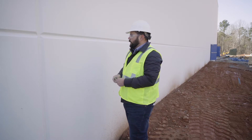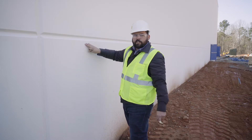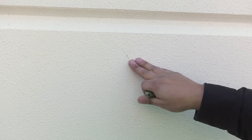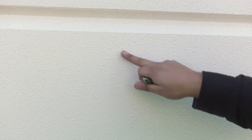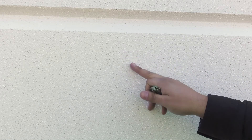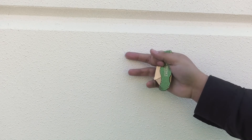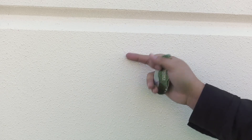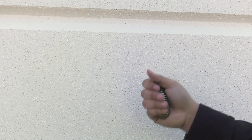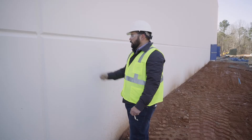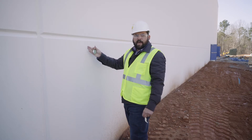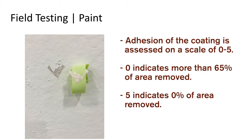What you're looking for is to ensure that the coating is actually stuck to the substrate. As you'll see, there isn't any failure to the actual coating. You'll see failure at the intersection of the X if paint starts to flap off of the substrate. This particular test has passed. Adhesion of the coating is assessed on a scale from 0 to 5 — 0 being greater than 65% of the area removed, and 5 being 0% of the area removed.